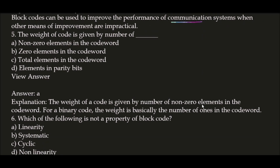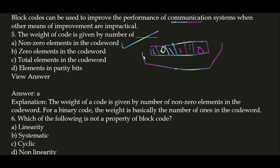The weight of a code is given by the number of non-zero elements in the code word. For example, in a code word 1, 0, 1, 1, 1, 0 — the number of ones is 4. Zeros are skipped and do not add to the weight. For a binary code, the weight is basically the number of ones in the code word.